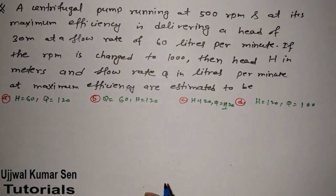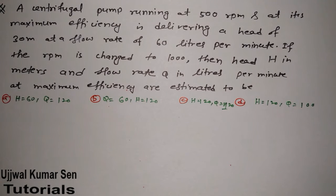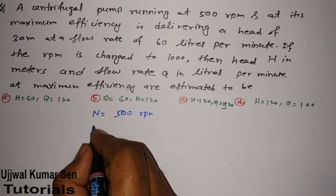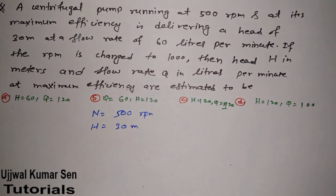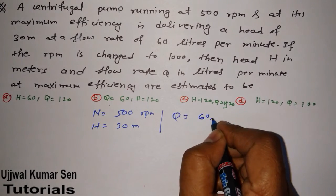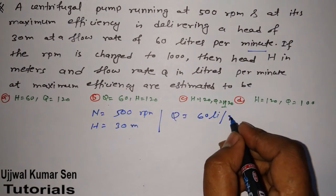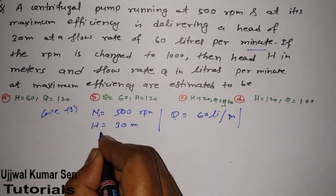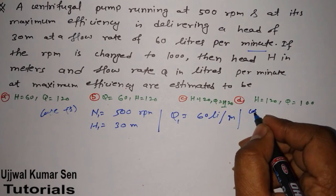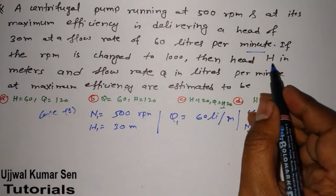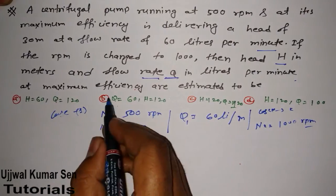The question: a centrifugal pump running at 500 rpm at maximum efficiency is delivering a head of 30 meters — so n1 = 500 rpm, h1 = 30 m — at a flow rate of 60 liters per minute, so q1 = 60 L/min. If the rpm is changed to 1000 (case 2: n2 = 1000 rpm), find the head and flow rate at maximum efficiency.